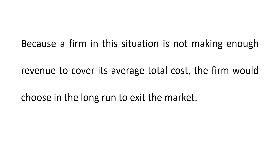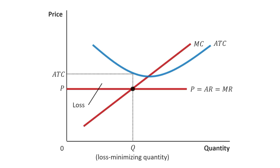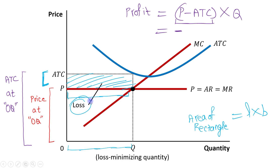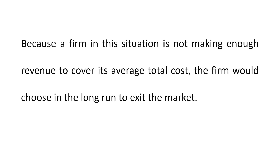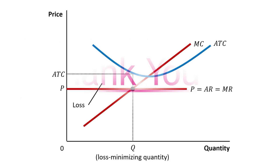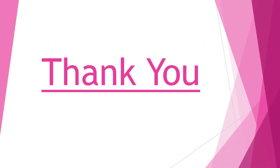Because a firm in this situation is not making enough revenue to cover its average total cost, it would choose in the long run to exit the market. The firm is not generating enough revenue to cover its average total cost, and that is the reason this firm will exit from the market in the long run. That is all — thank you.